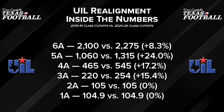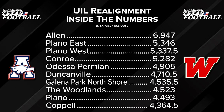Now let's talk about the largest schools in the state. Allen remains the largest — they've actually shrunk. They were over 7,000 two years ago, but they're down about 100 kids to 6,947. Plano ISD makes up three of the top nine: Plano East, Plano West, and Plano at number nine. Conroe is the one everyone forgets — fourth largest school in the state with 5,200 students. Odessa Permian is the fifth largest at 4,905.